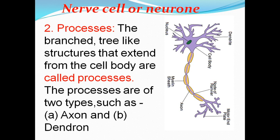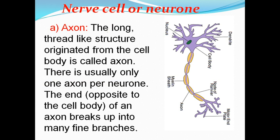The branched tree-like structures that extend from the cell body are called processes. The long thread-like structure that is generated from the cell body is called the axon.